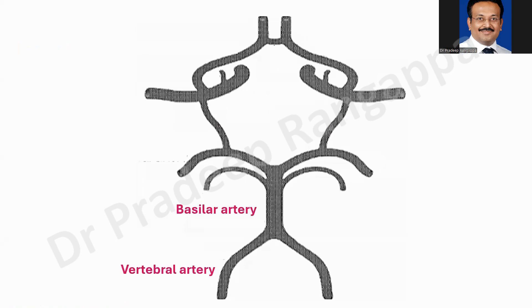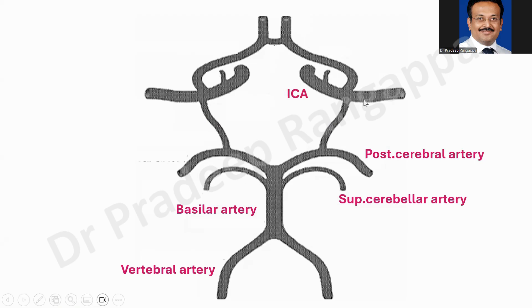Looking at the circle of Willis, the vertebrobasilar artery is relevant but more pertinent for our subarachnoid hemorrhage work is the MCA. This is the internal carotid artery — you can see a bit of it also on transcranial Doppler. The middle cerebral artery is possibly the easiest artery to identify, and I'll show you videos of how we check the velocities. The anterior cerebral artery looks blue and the posterior cerebral artery looks red on transcranial Doppler.